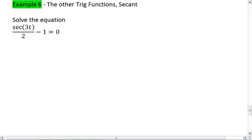Alright, this is going to be a little bit tricky. So what we're going to do is solve it like a standard trig function where we solve the algebraic part first. We get sec(3t)/2 equals positive 1. We get sec(3t) equals 2.